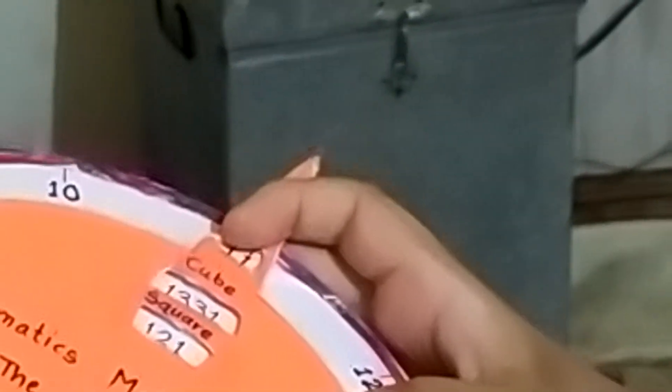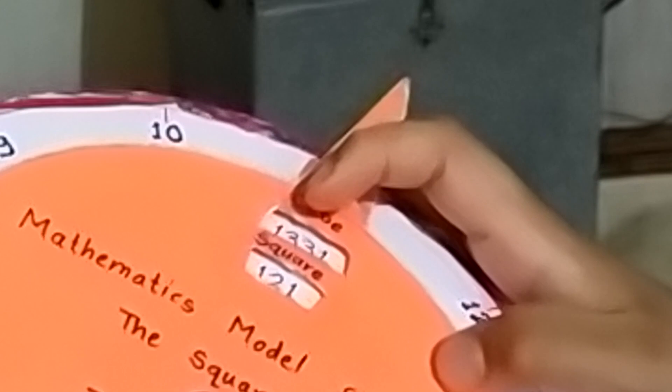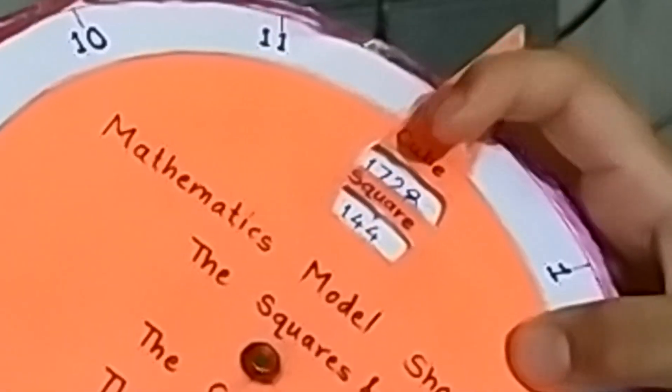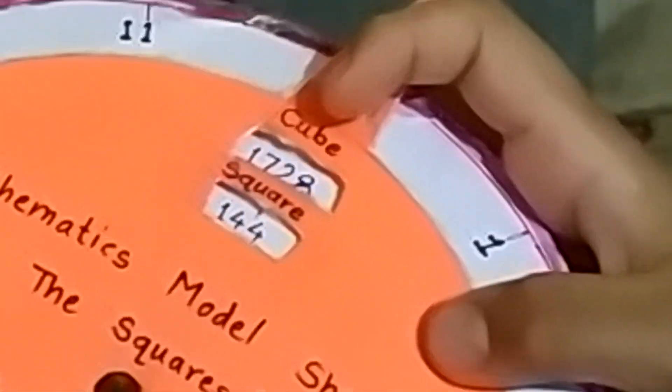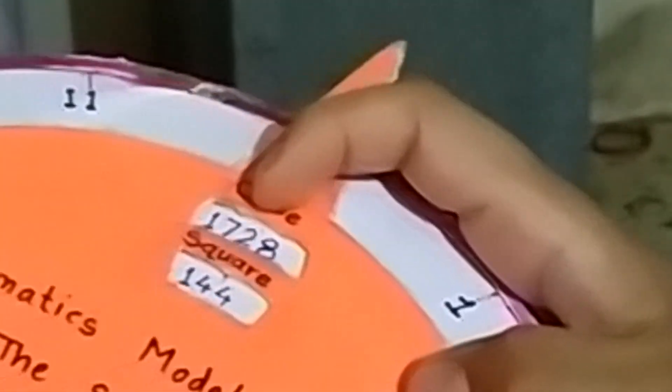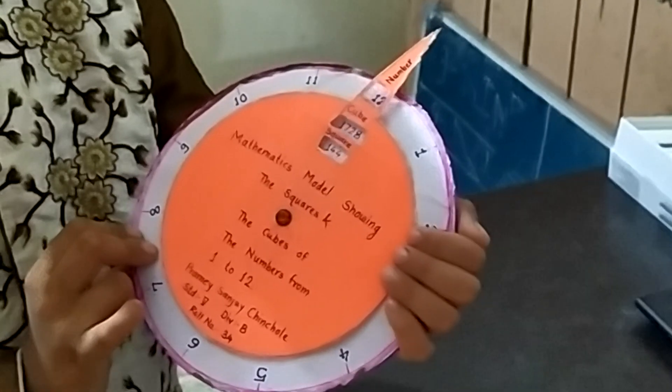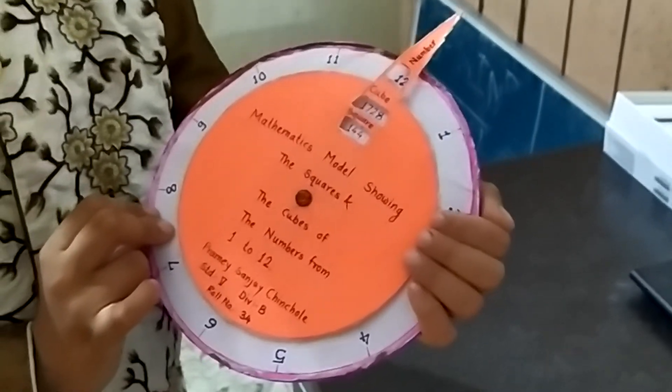11th square is 121 and 11th cube is 1331. 12th square is 144 and 12th cube is 1728.